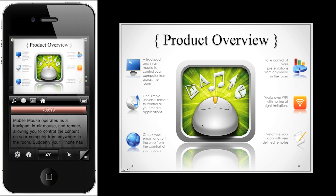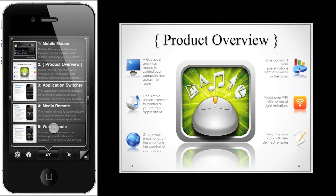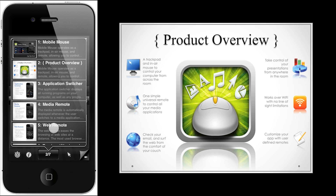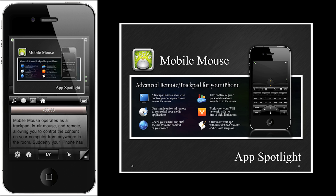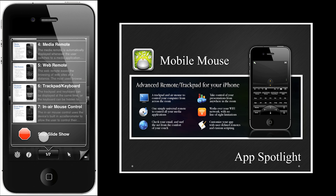If at any point you'd like to jump to a specific slide, just tap the button at the bottom to bring up the slide picker. From here you can view all your slides along with their slide titles and notes. To jump to a slide, just tap the slide. If you want to end the slideshow, bring up the slide picker, scroll to the bottom, and tap the stop icon.